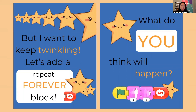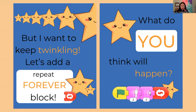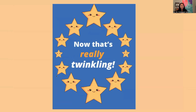But I want to keep twinkling. Let's add a repeat block forever. What do you think will happen? So if we run this code and it says, when the green flag is clicked, we're going to get big and then get small, forever and ever and ever. Let's see. Now that's really twinkling — big and small, big and small.